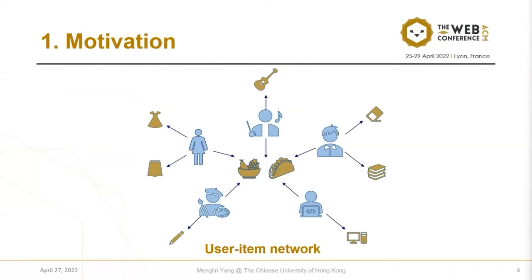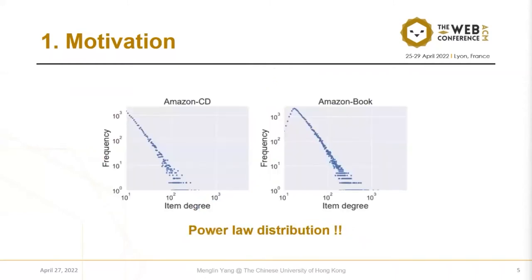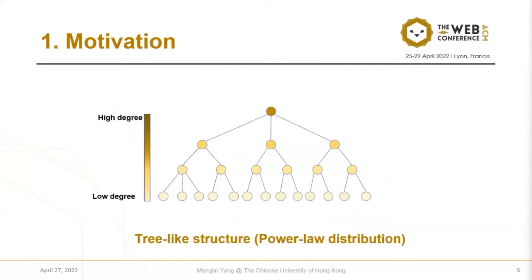This phenomenon is very interesting, and we plot their degree distribution. We chose two large-scale datasets, Amazon CD and Amazon Book. We found that the item degree follows a power-law distribution, meaning the majority of items have low degree and the minority have high degree. After reorganizing the items by their degree, we can obtain a tree-like structure, where low-degree items are placed close to the leaves and high-degree items are placed close to the root.